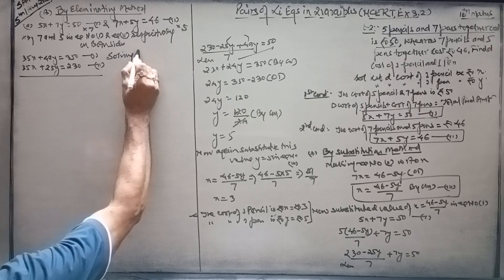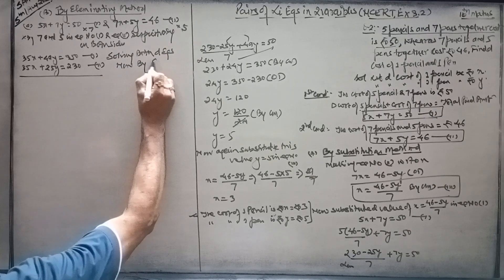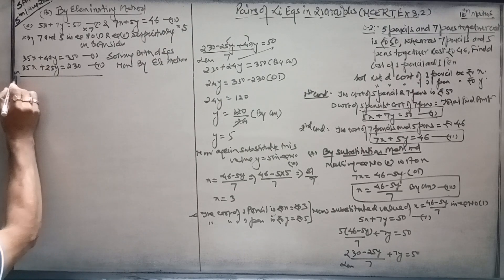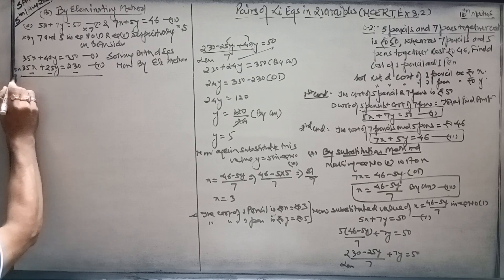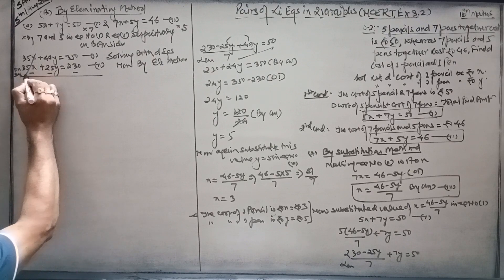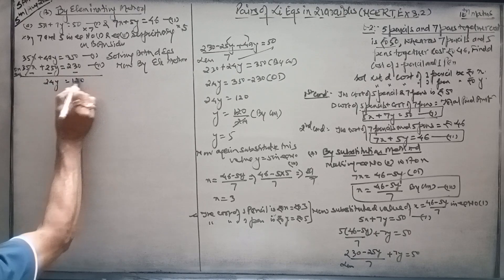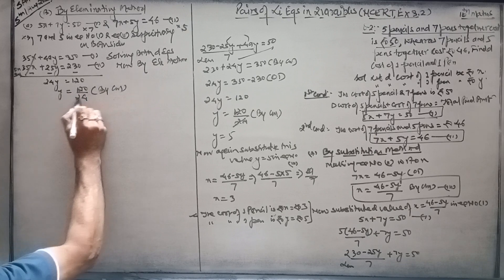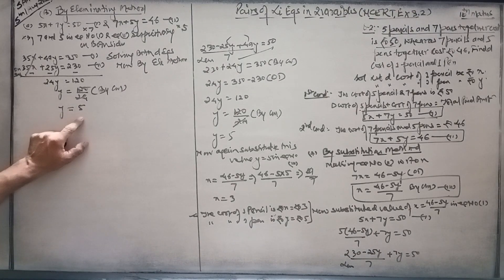Solving both the equations now. By subtraction, when you chase the signs on subtraction minus on subtraction, 49 minus 25 is 24. Equal to 120. So y is equal to 120 by 24 by cross multiplication. So y is equal to 5.